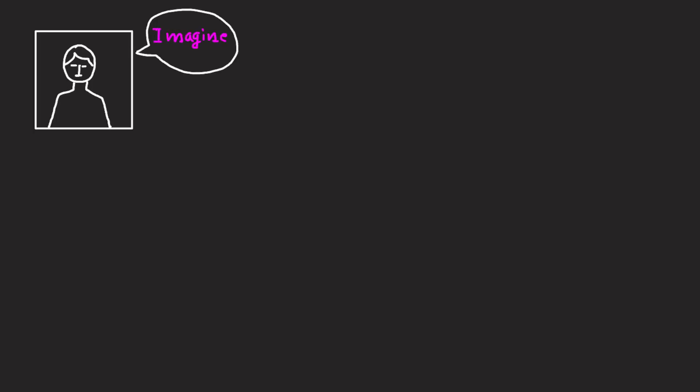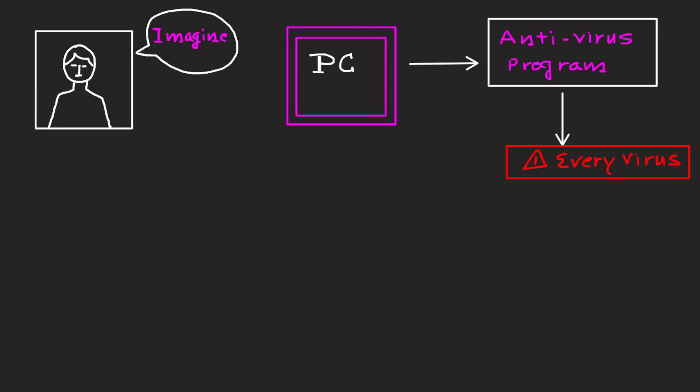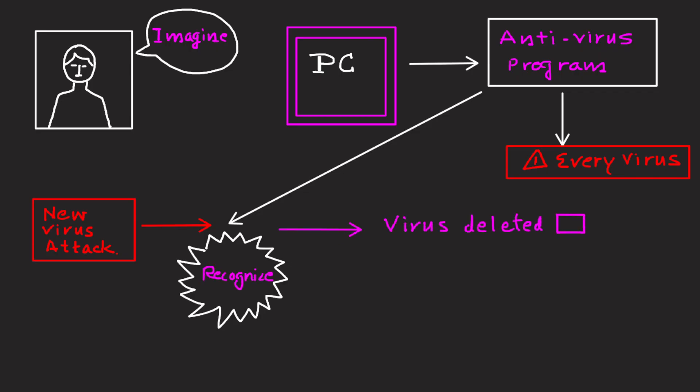Just imagine your computer has an antivirus program that remembers every single virus it has ever encountered. Next time the same virus tries to enter or attack, the antivirus immediately recognizes and deletes it. Now imagine bacteria have a similar kind of system inside them. CRISPR is that system.